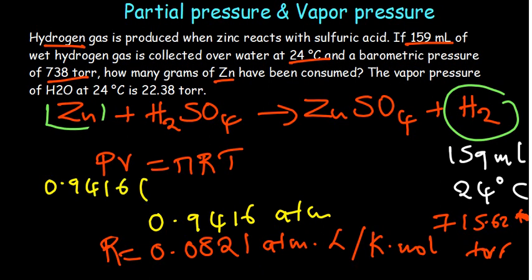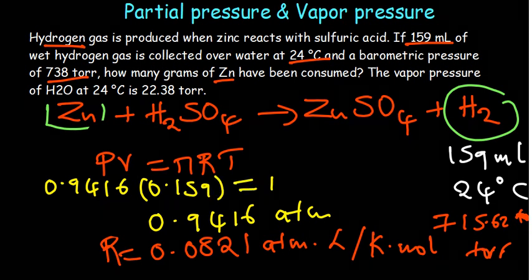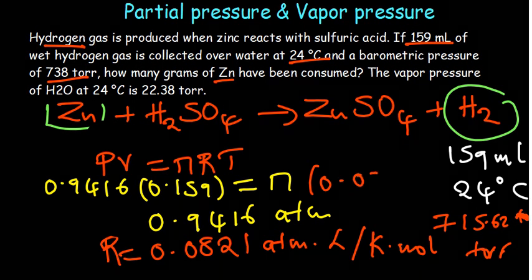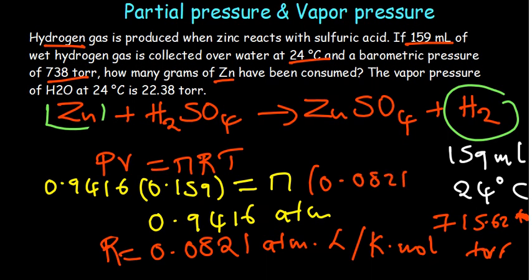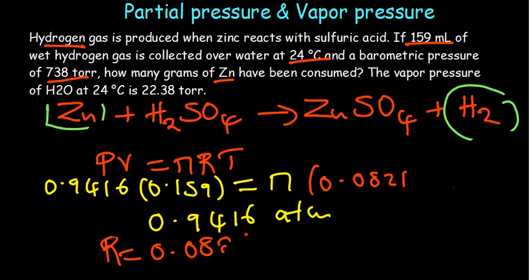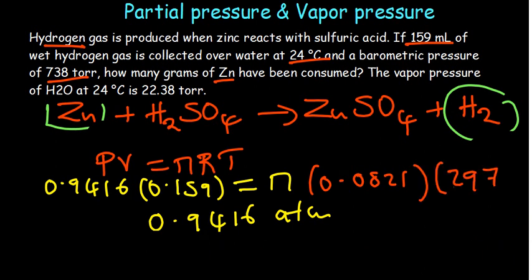Our volume must have been liters by dividing 159 by 1000. The number of moles we don't know. The R is 0.0821. The temperature, 24, has to go to the Kelvin temperature. So 24 plus 273. 273 plus 24. 297. So all the units are matching up with the R constant.